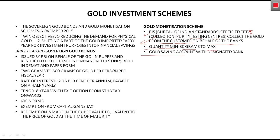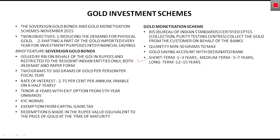You need to open a Gold Saving Account with a designated bank — one designated by the RBI to handle gold as a saving. You have to open this Gold Saving Account first. You can invest in this scheme for different tenors: short term (1 to 3 years), medium term (5 to 7 years), or long term (12 to 15 years). The interest rate differs for different tenors.